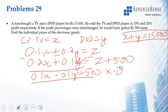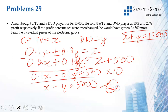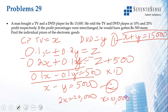Adding the two equations: x + y = 15,000 and x − y = 5,000, we get 2x = 20,000, so x = 10,000. Substituting back, y = 5,000. Therefore, the TV costs 10,000 rupees and the DVD player costs 5,000 rupees.